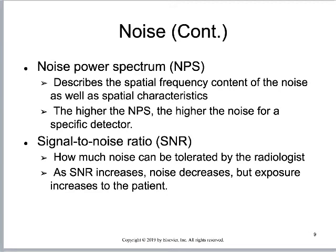The noise power spectrum describes the spatial frequency content of the noise as well as its spatial characteristics. As the NPS gets higher, the noise is higher for a specific detector, and that noise would eventually start to influence whether we can see tiny objects. Signal-to-noise ratio asks: how much noise can be tolerated? As the SNR increases, that's a good thing — more signal and less noise. Generally, with almost all digital systems, to increase the SNR you have to increase patient dose.